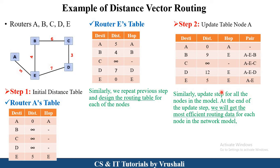Similarly, you update this routing table for each pair. After that, you will get the most efficient routing data. In this way, distance vector routing generates routing tables for each router to find out the shortest path based on neighbors — calculating the distance of neighbors and finding the shortest path between source and destination.